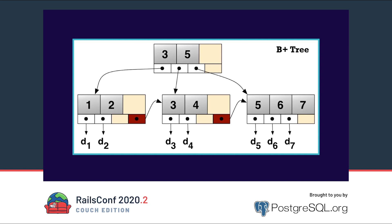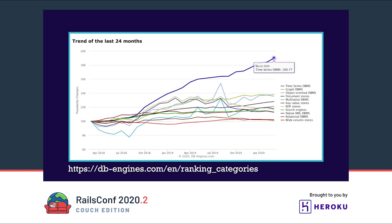If we look at how most relational databases are implemented, we see they use a data structure like a B-tree or B-plus-tree. The B-tree contains several pages with data and each page has pointers to the next page. If one of these pages gets too big it is split into new pages. Because we will write a lot of metrics, we would constantly need to create new pages and write to disk — this wouldn't be very efficient. In the last few years a different type of database has become very popular: the time series database.